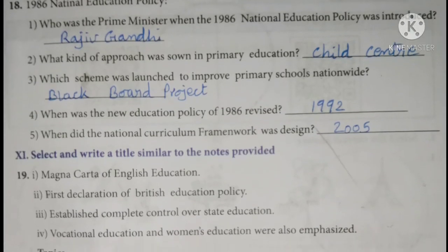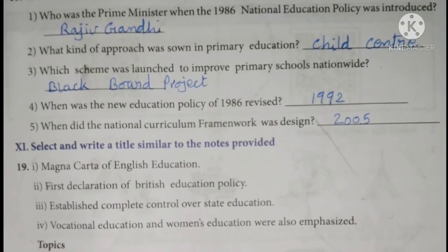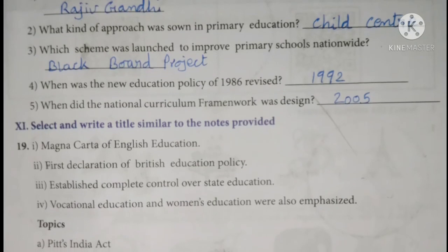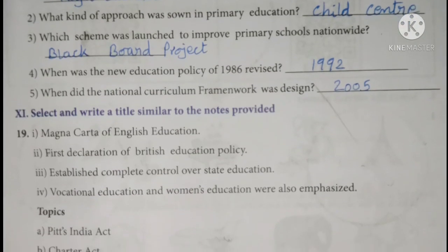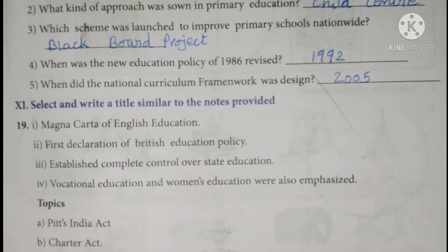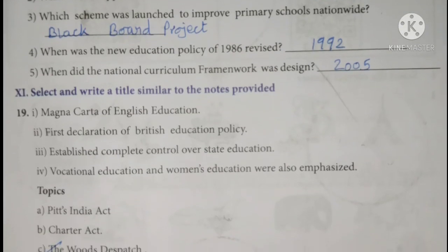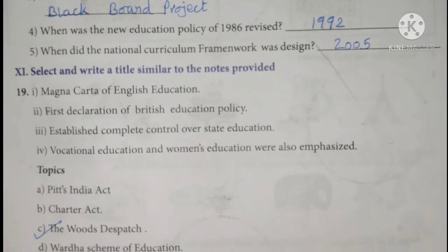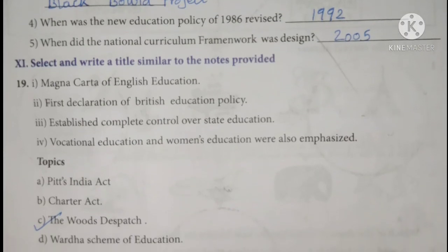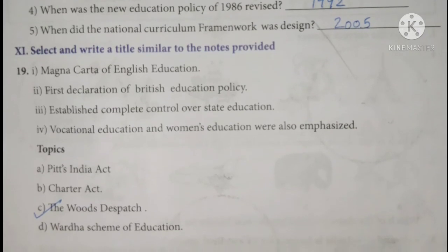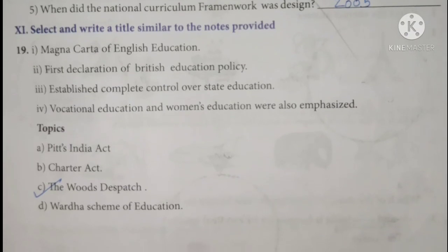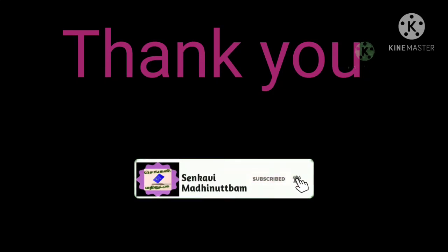Select and write a title similar to the notes provided: Magna Carta of English Education, First Declaration of British Education Policy, established complete control over state education, vocational education and women's education were also emphasized. The answer belongs to the Woods Dispatch — option C. Thank you students, for more videos subscribe to our channel.